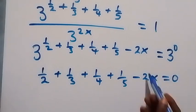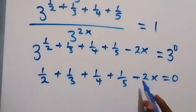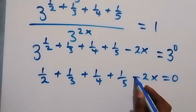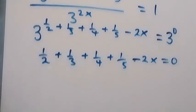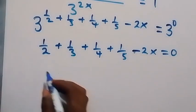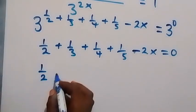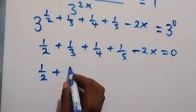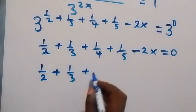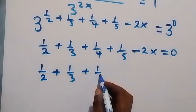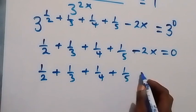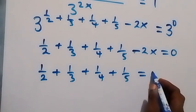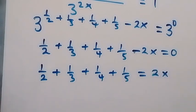We take minus 2x to the other side, so this becomes 1/2 + 1/3 + 1/4 + 1/5 equals 2x.